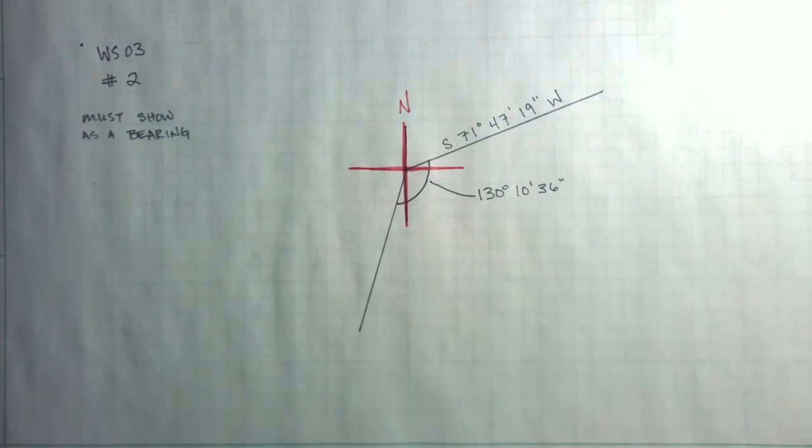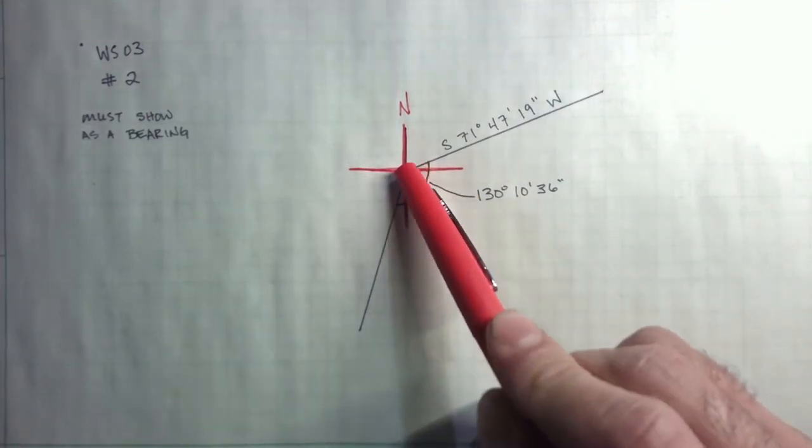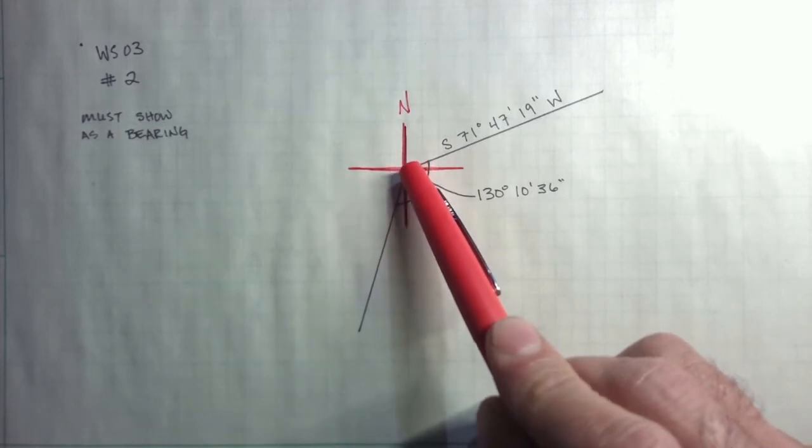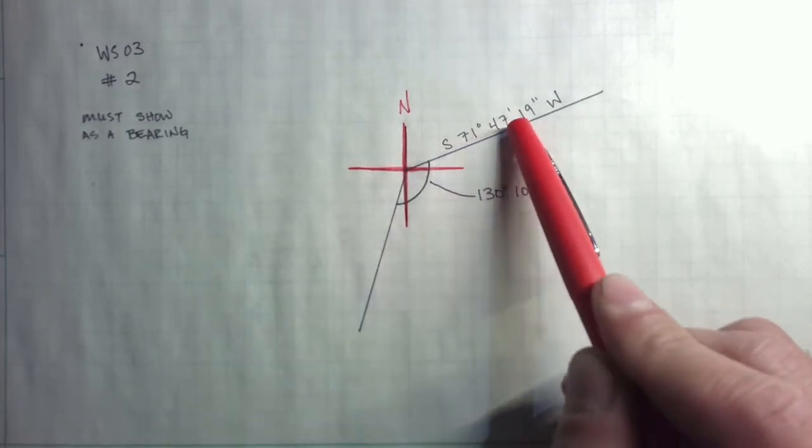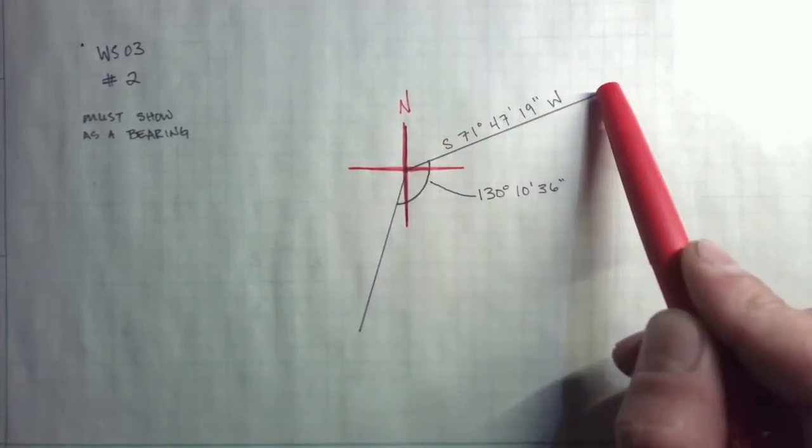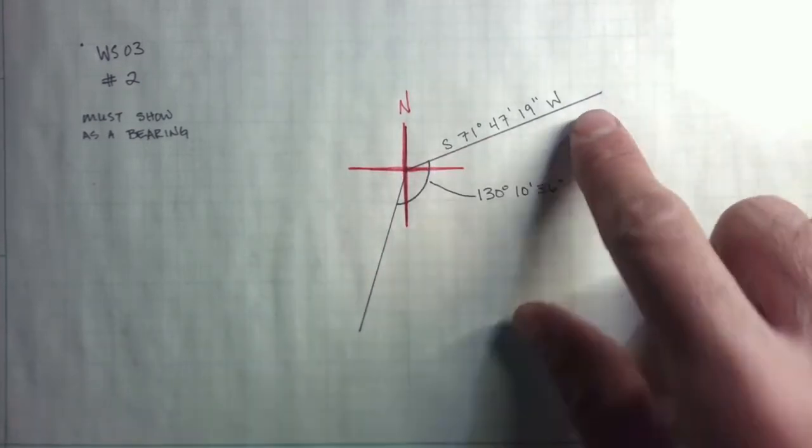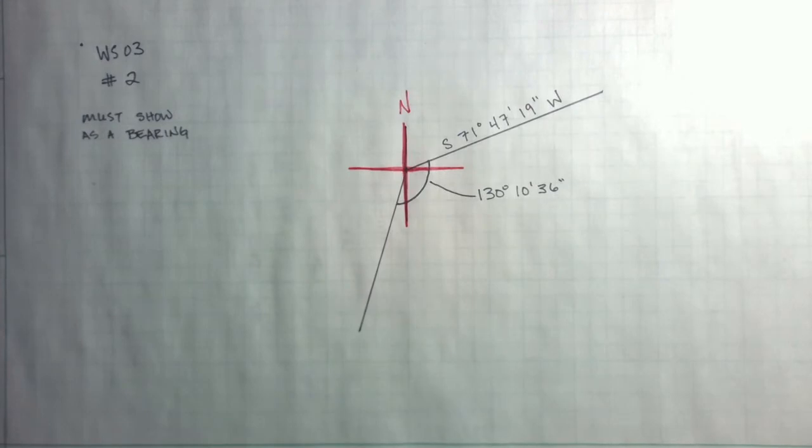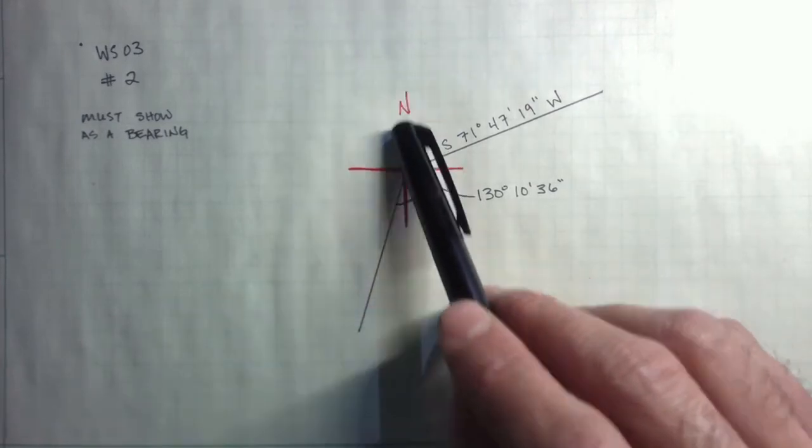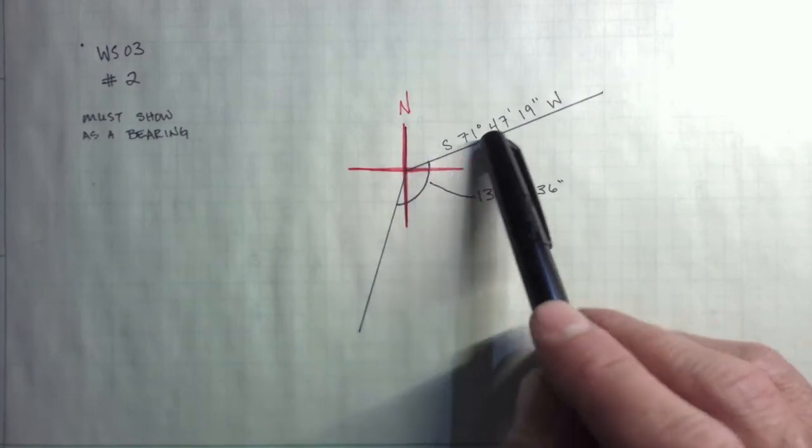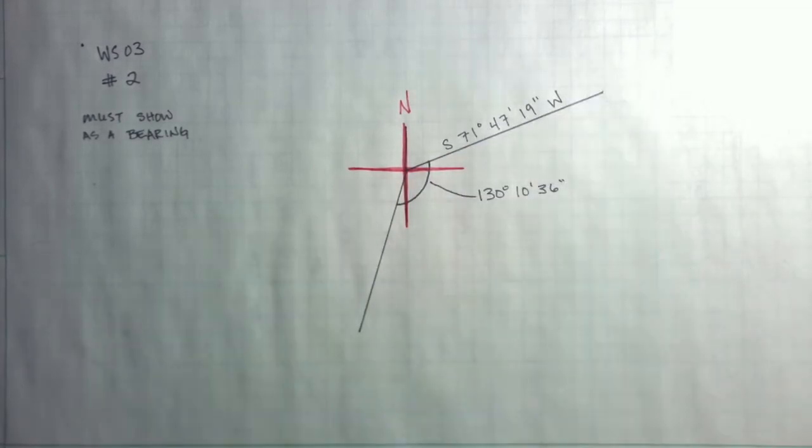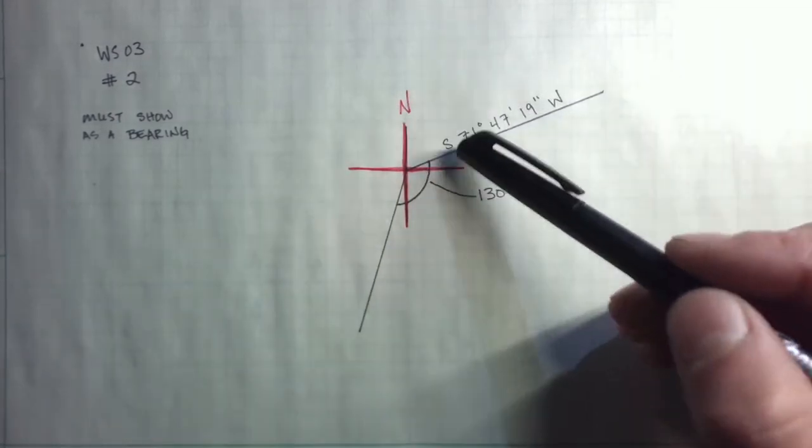So, again, I want to be standing at this point where the two lines intersect. And if I'm looking from this point, if I'm looking down this line or up this line, the first thing I ask is, this bearing, does that make sense to me? If my north arrow is here, does a southwest bearing make sense? And the answer is no. This is the northeast quadrant.